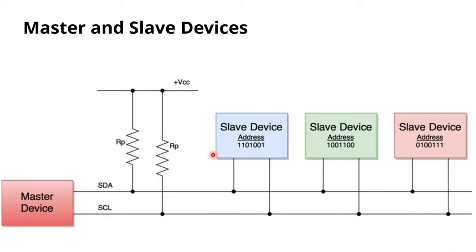The master always initiates the clock during data exchange. The master must send a startup sequence first so all slaves can wake up. After the startup, the master sends a specific 7-bit address to all slaves. The slave whose address matches will acknowledge to the master, indicating it is available for communication. After the data exchange is done, the master sends a stop sequence.